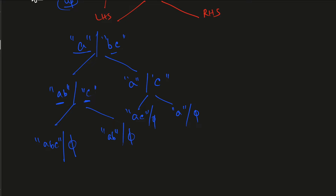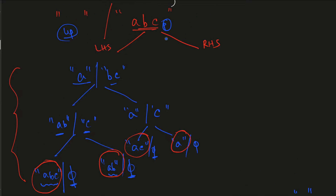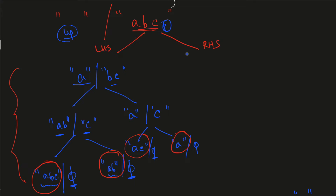We know we've completed a branch because there is a base condition in recursive calls. In our case, the base condition is when the processed string becomes empty — we have nothing left to pick. When we reach that condition, we return whatever we have accumulated in the unprocessed string. So far on the LHS side, we have obtained four subsequences: 'abc', 'ab', 'ac', and 'a'.